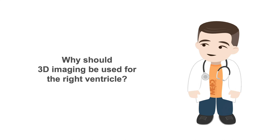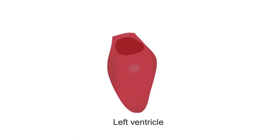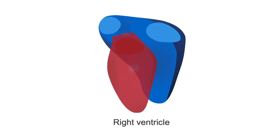When compared to the left ventricle, the right ventricle has a more complex shape. The right ventricle has a crescent shape and it wraps around the left ventricle, making it difficult to image.